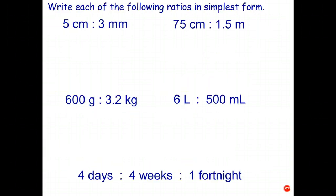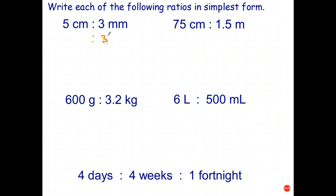Let's apply this to some questions. I'll do the first one and then I want you to try the remaining ones. We've got a ratio with units and we want to get rid of the units, because ratios don't have units. We've got the ratio 5 centimeters is to 3 millimeters. Convert them to the same unit — always choose the smaller unit to avoid decimals — so we keep 3 millimeters. 1 centimeter is 10 millimeters, so 5 centimeters is 50 millimeters. Because the units are the same, we can cross them out and write the ratio as 50 is to 3.